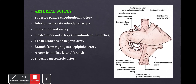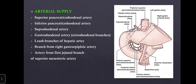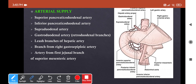Regarding arterial supply: the duodenum develops from both foregut and midgut, so it receives branches from both the celiac trunk and the superior mesenteric artery. The superior pancreaticoduodenal artery is a branch of the gastroduodenal artery, itself a branch of the hepatic artery of the celiac trunk. The inferior pancreaticoduodenal artery arises from the superior mesenteric artery. These two arteries branch into anterior and posterior pancreaticoduodenal arcades, supplying the anterior and posterior surfaces. Additional supply comes from the supraduodenal artery, retroduodenal branches of the gastroduodenal artery, branches of the hepatic artery, and branches from the right gastroepiploic artery and first jejunal branch of the superior mesenteric artery.